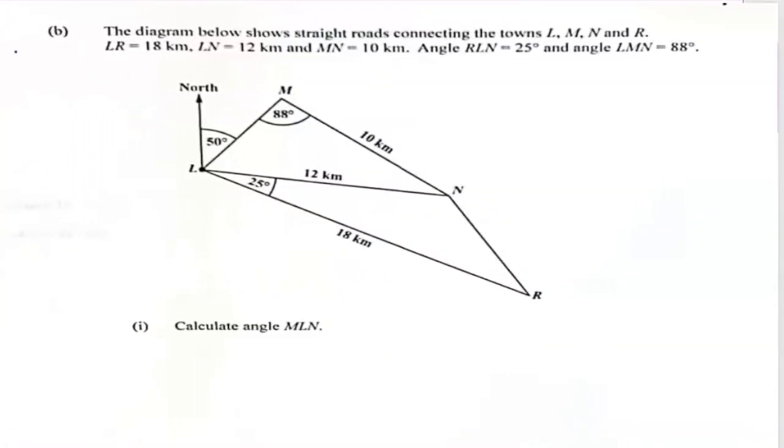So here we have a trigonometry question. The diagram below shows straight roads connecting the towns L, M, N, and R. LR is 18 kilometers, and we have LN, which is 12 kilometers. So that's 18, LN is 12 kilometers. And then the final one, MN, is 10 kilometers. The angle RLN is 25. So we have RLN that's 25, and NML that's 88.